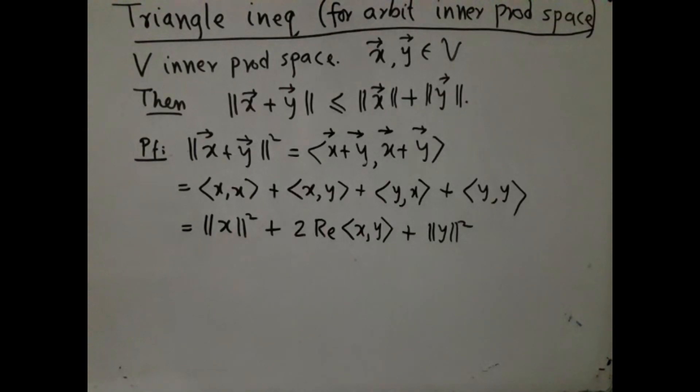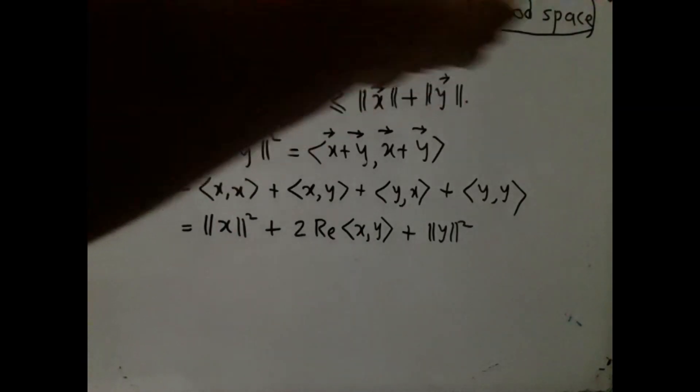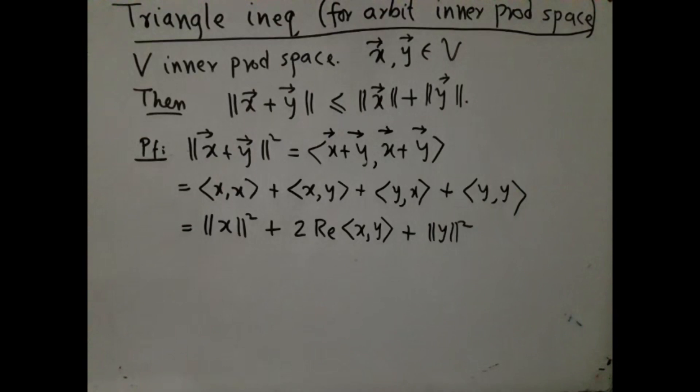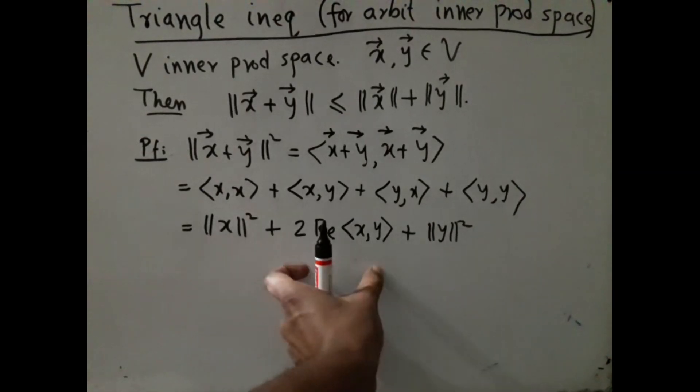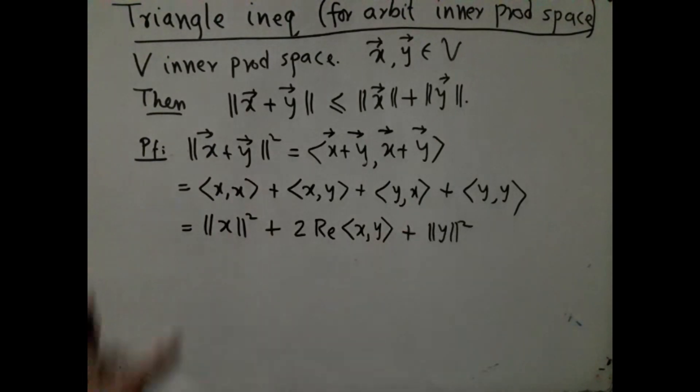Now we are going to apply triangle inequality for real numbers. These are all real numbers - we are proving triangle inequality for arbitrary inner product spaces, but we shall employ triangle inequality for real numbers. So this is sum of three things, so this must be ≤ absolute value of this plus absolute value of this plus absolute value of this. Absolute value of these two terms are themselves because they're non-negative, but here we need to put absolute value.